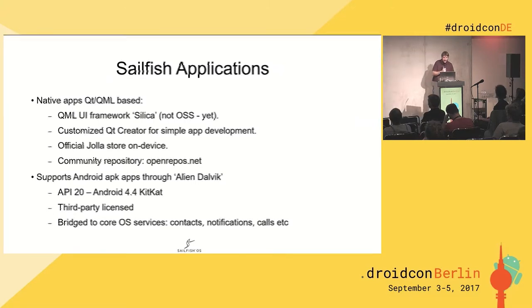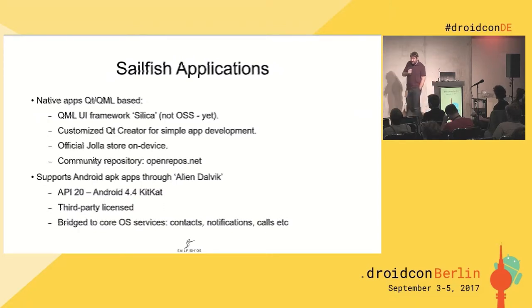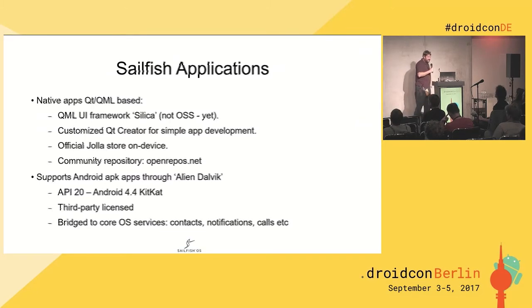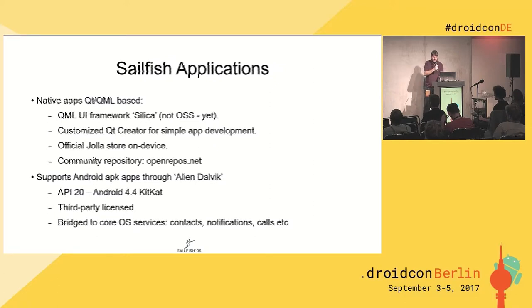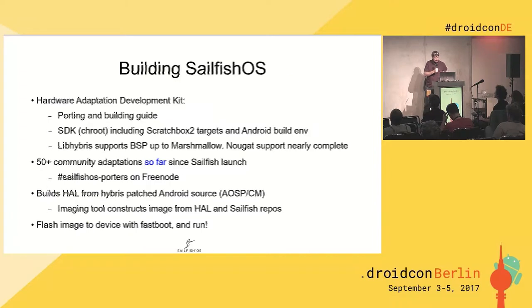We do have an Android compatibility layer, because a new mobile OS without apps isn't really worth bothering with. It's called Alien Dalvik and it's aging a little — it supports API 20 / Android 4.4 — but most things you need like WhatsApp still run with it. There are plans to update it. It can access contact lists and notifications, so it works well — but not as well as native apps.